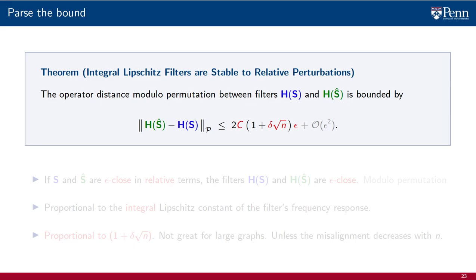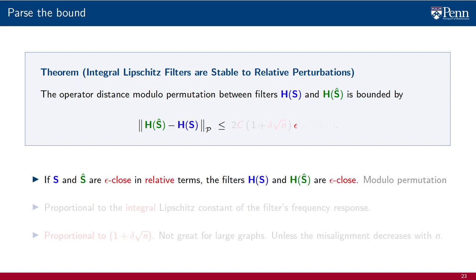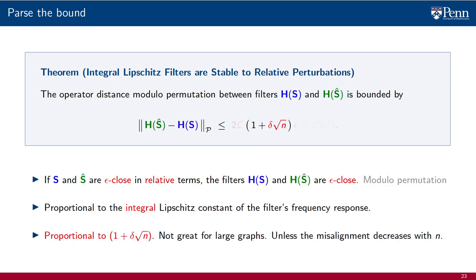Given that the bound is the same, it doesn't really require that we parse it again, but here are the relevant points. The claim of the theorem is that if the shift operators are epsilon-close in relative terms, the respective filters are also epsilon-close. Closeness here includes consideration of the permutation that makes the shifts closest to each other and also the permutation that makes the filters closest. Norms are modulo permutation. The constant translating shift operator perturbations into filter perturbations is proportional to the integral Lipschitz constant and proportional to the term 1 plus delta times square root of n, which is not great for large graphs, unless the eigenvector misalignment between the perturbation E and the shift S decreases with n.